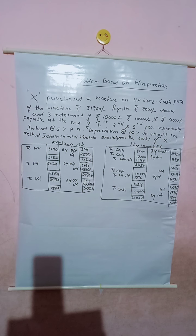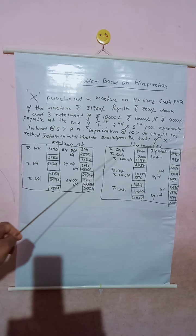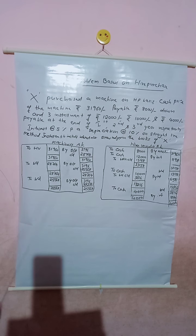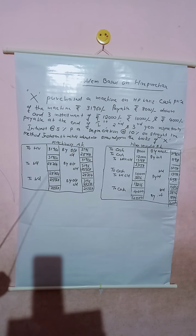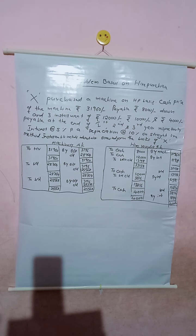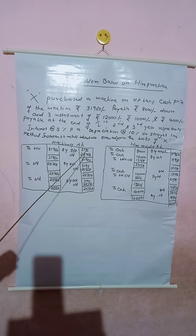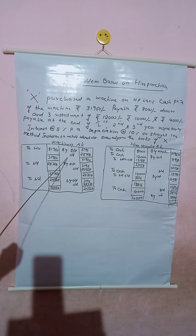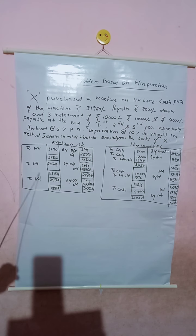Then we will calculate the depreciation charge. Depreciation is 10% on straight line basis. The asset cost price is Rs. 31,960, so depreciation is equal to Rs. 3,196. That depreciation amount is credited in the machinery account. So write the entry on the credit side of the machinery account: by depreciation Rs. 3,196. Then the balance carried down is Rs. 28,764, and the next year opening balance brought down on the debit side is Rs. 28,764.